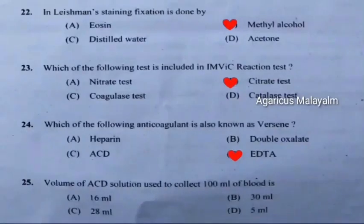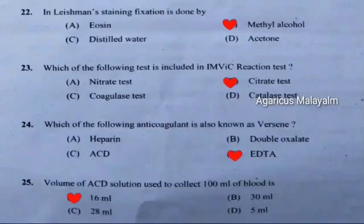Twenty-fifth question: Volume of ACD solution used to collect 100 ml of blood is. Correct answer is Option A: 60 ml.